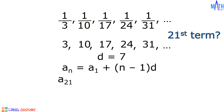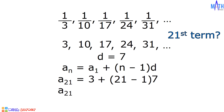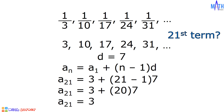A sub n becomes a sub 21. A sub 1 is equal to 3, n − 1 is equal to 21 − 1, and d is equal to 7. Simplifying: a sub 21 = 3 + (21 − 1) × 7 = 3 + 20 × 7 = 3 + 140 = 143.